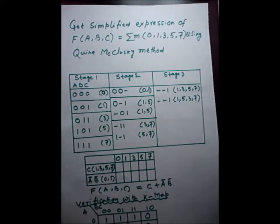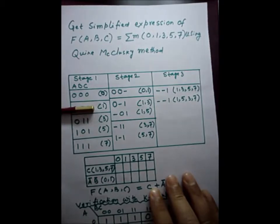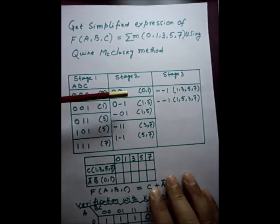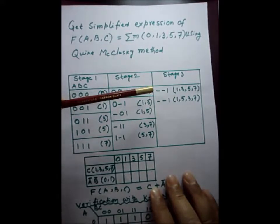Now we are coming to the mapping. The first element of the first group is to be mapped with the element of the second group, because the second group has only one element. After mapping, you can see that C and C̅ are being eliminated. Therefore we are putting a dash here, and we are writing in brackets the numbers that have been used: 0 and 1.